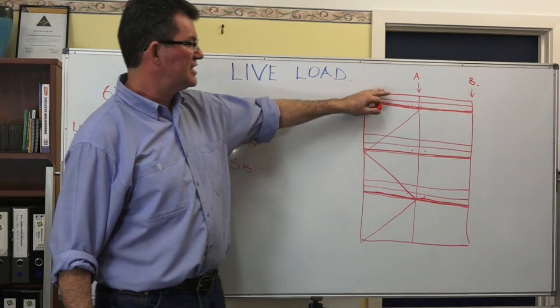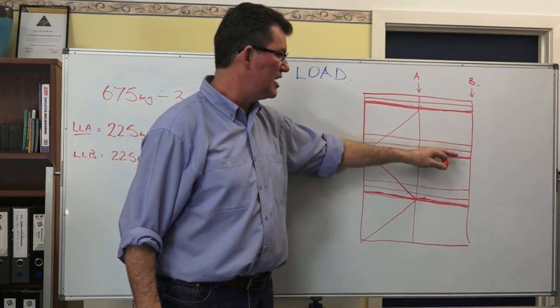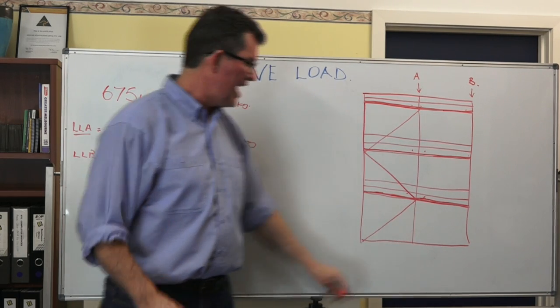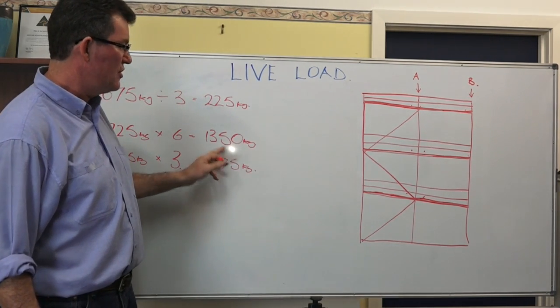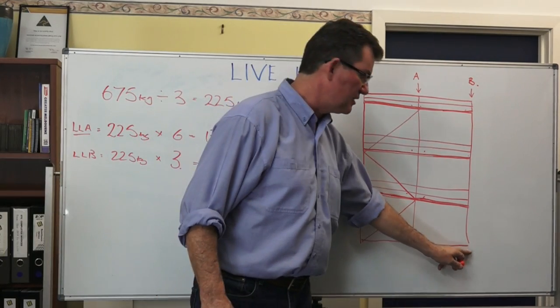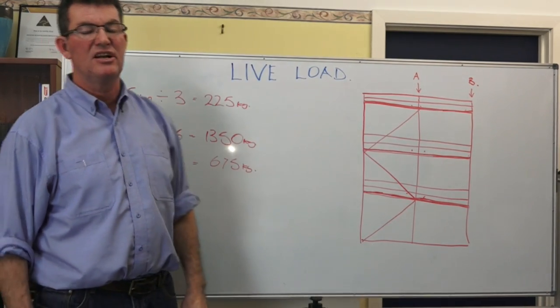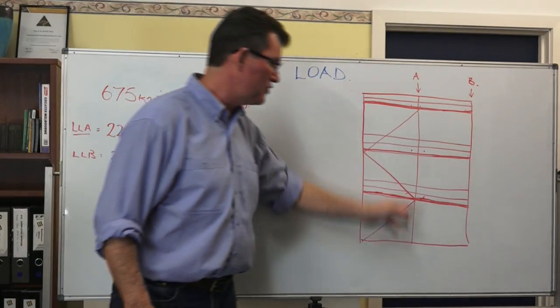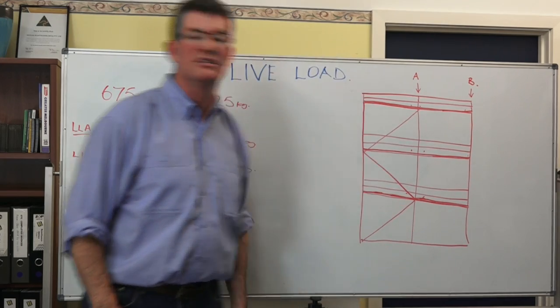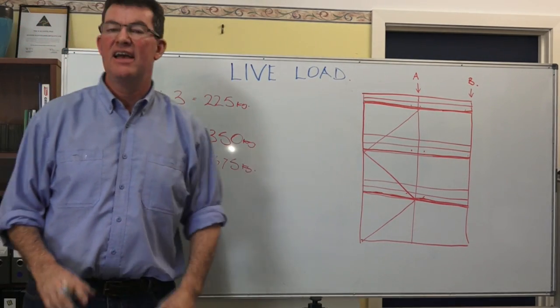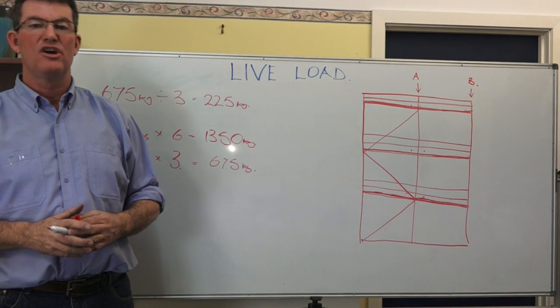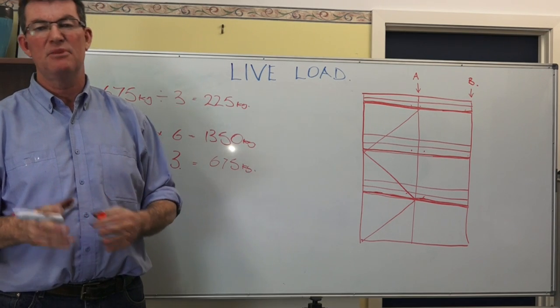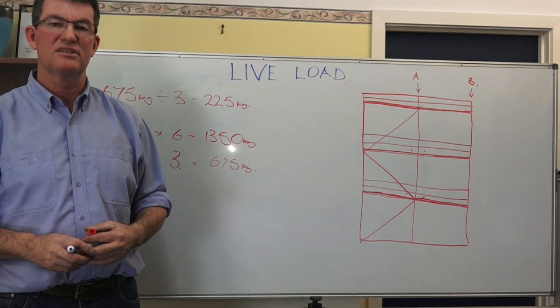Heavy duty scaffold with 675 kilos applied to each working platform. Standard A at the ground or at the base or the supporting surface has a combined live load of 1350 kilos. Standard B has a live load of 675 kilos. That is the distribution of the weight of persons and materials on the scaffold being transferred down the standard to the ground. We add the dead load and the live load together and that gives us the total amount of load being transferred down the standard to the supporting surface. Remembering that a screw jack has a maximum allowable load of 3030 kilos.